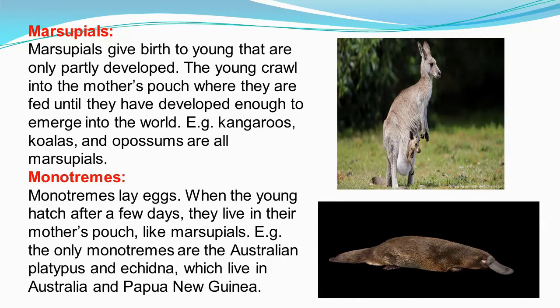Examples of monotremes are the Australian platypus and echidna. These two examples of monotremes exist in Australia and Papua New Guinea.